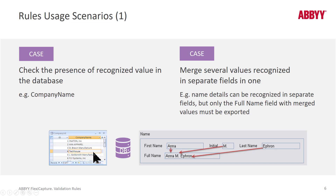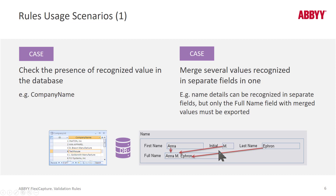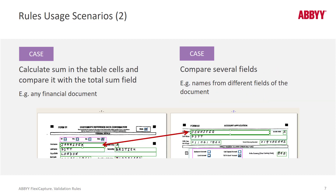As I mentioned, we can merge data. So here we're merging the first, middle, and last names and merging it to a field without region — a full name field. This is simply done with an out-of-the-box rule and no scripting is needed. We'll talk more about the calculate sum rule shortly.